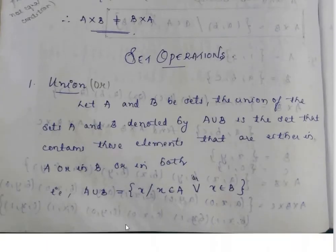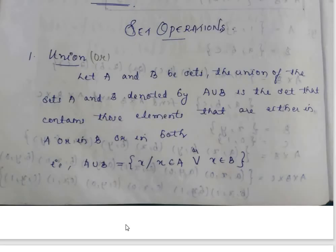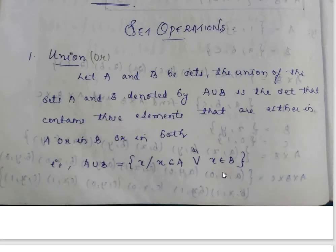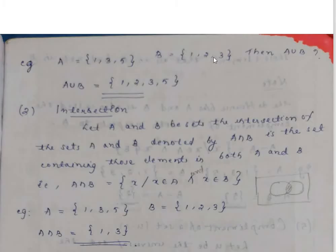Set operations: we are learning Union, Intersection, and Complement. Union of A and B, denoted A union B, is the set that contains those elements that are either in A or in B or in both. That is, A union B equals the set of all x such that x element of A or x element of B.